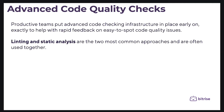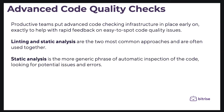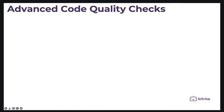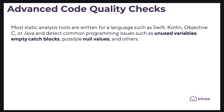Linting and static analysis are two of the most common approaches and are often used together. Static analysis is the more generic phrase for automatic inspection of code looking for potential issues and errors. Mobile static analysis tools usually help detect use cases that are more complex than what a simple lint rule could catch. Most static analysis tools are written for a specific language such as Swift, Kotlin, Objective-C, or Java, and detect common programming issues such as unused variables, empty catch blocks, and possible null values.